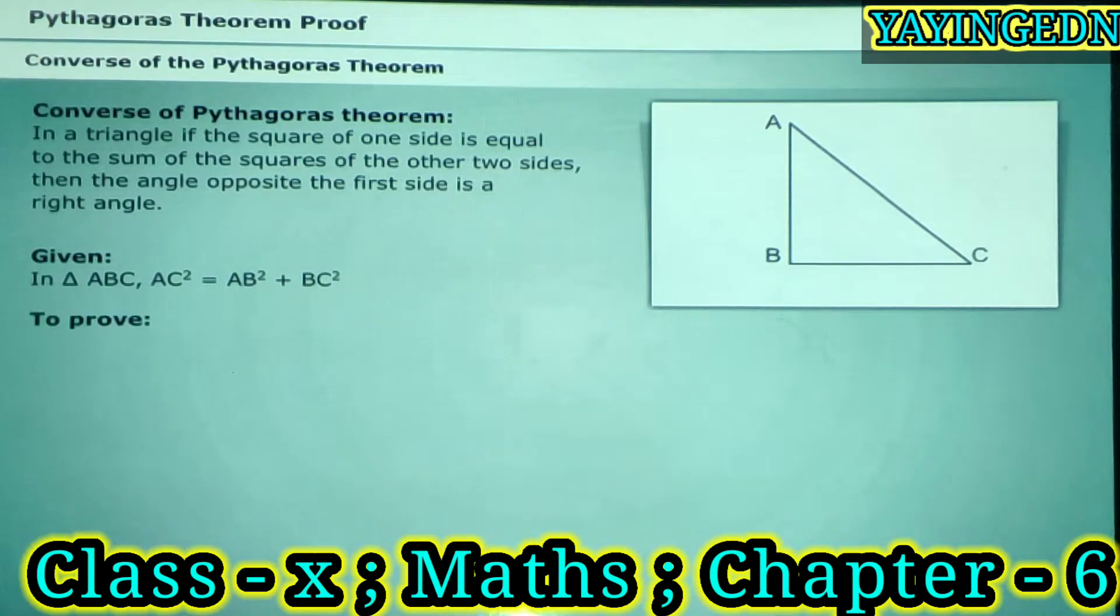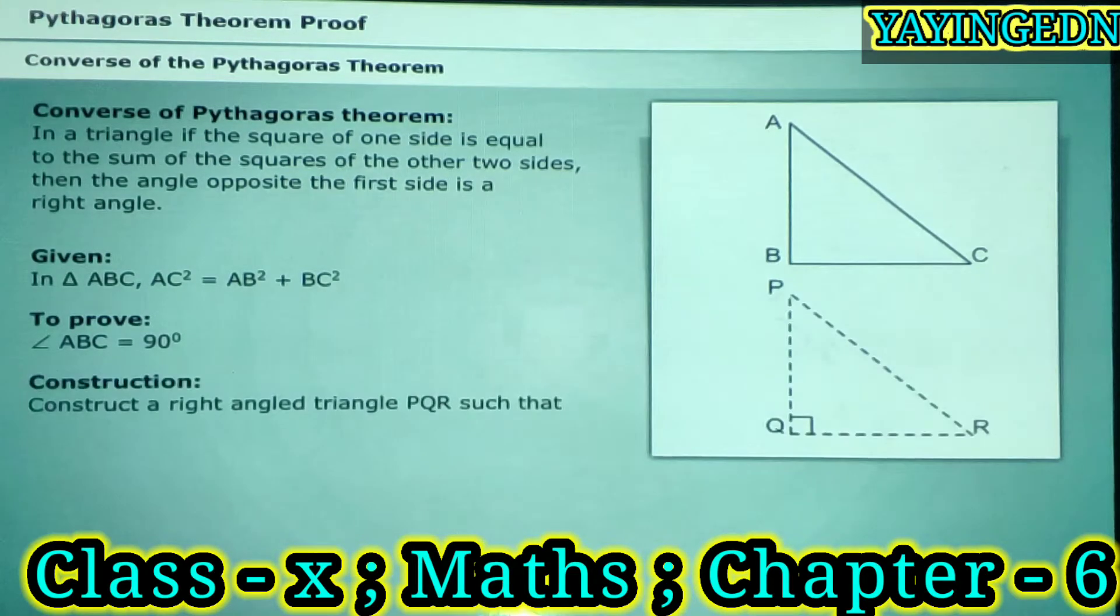We have to prove that angle ABC is equal to 90 degrees. We construct a right angled triangle PQR, such that PQ is equal to AB, QR is equal to BC, and angle PQR is equal to 90 degrees.